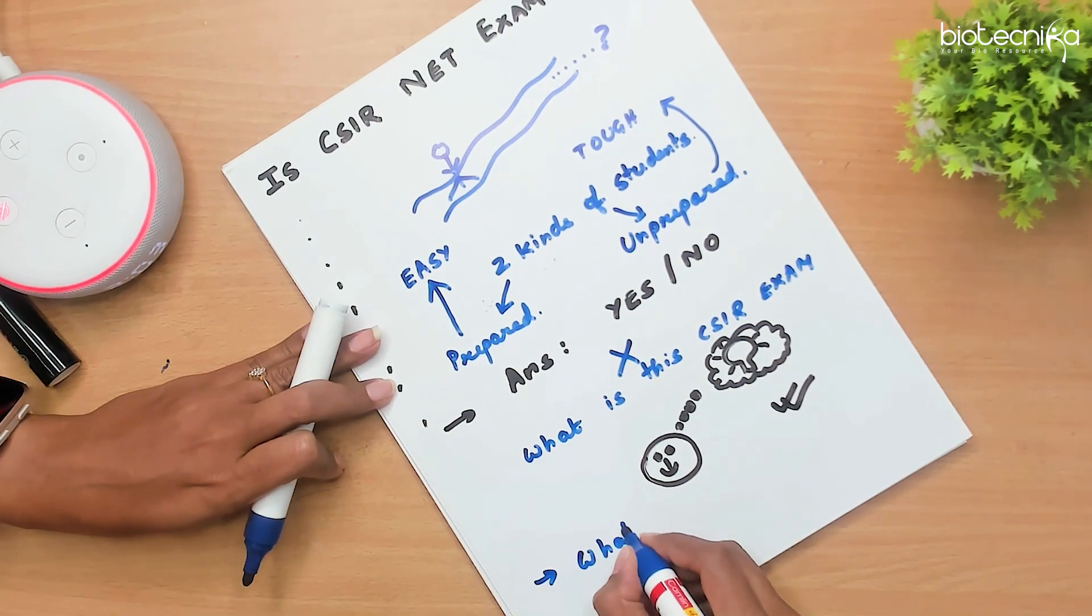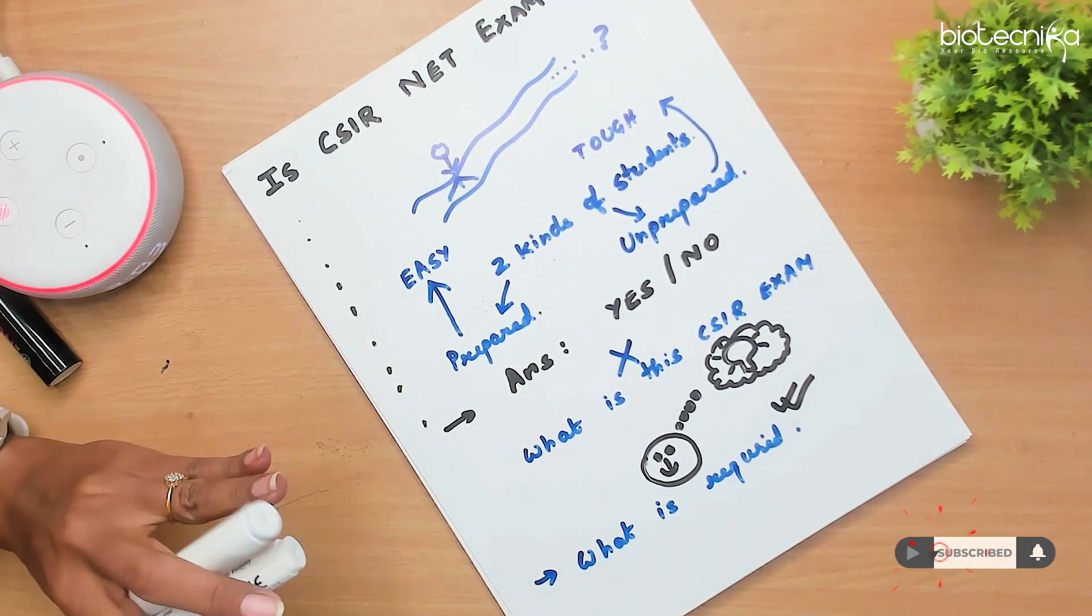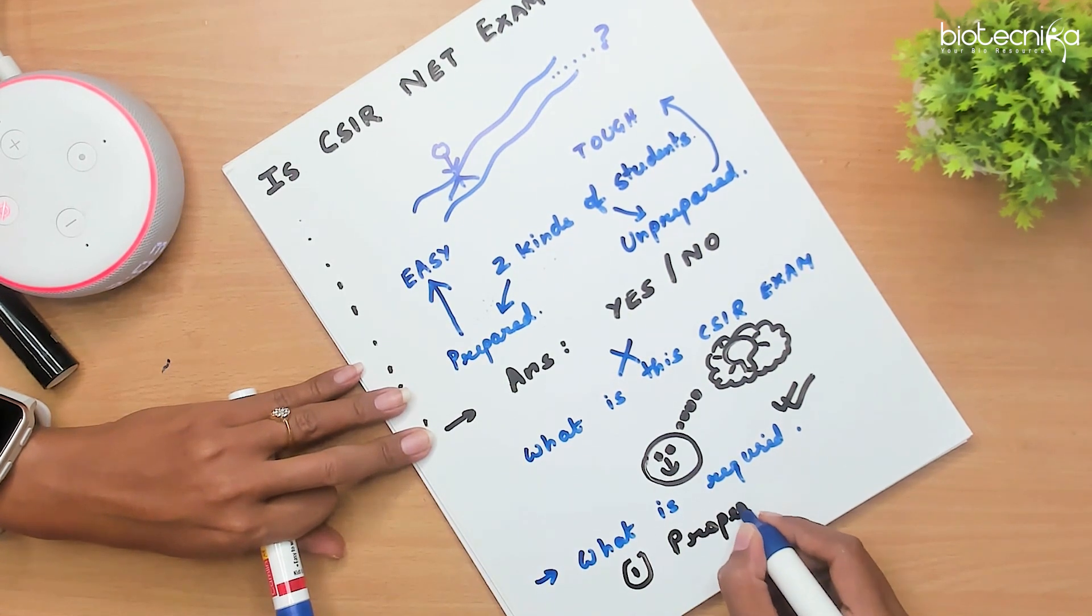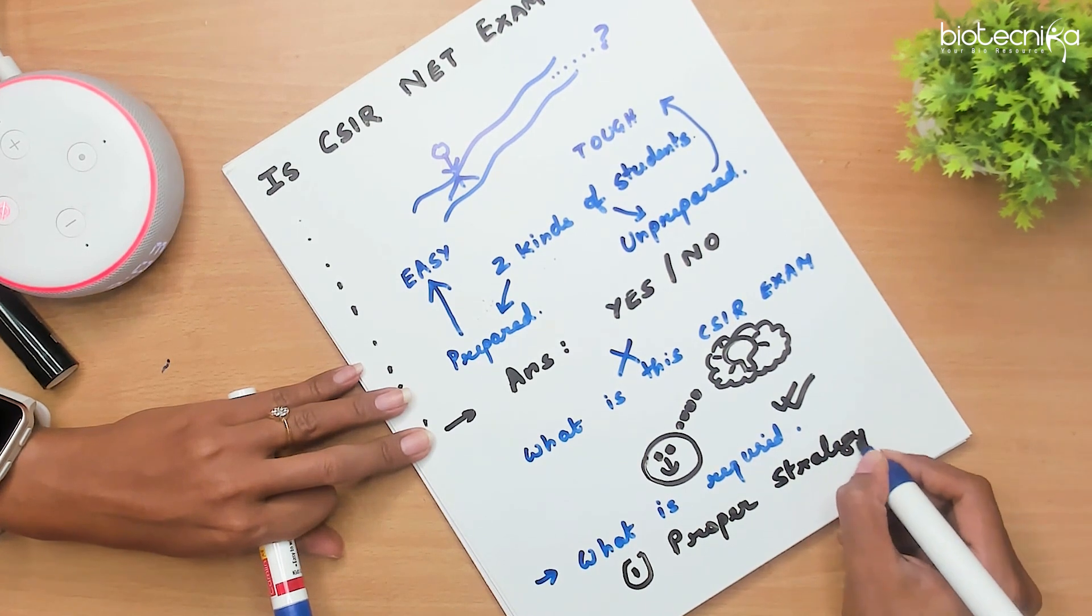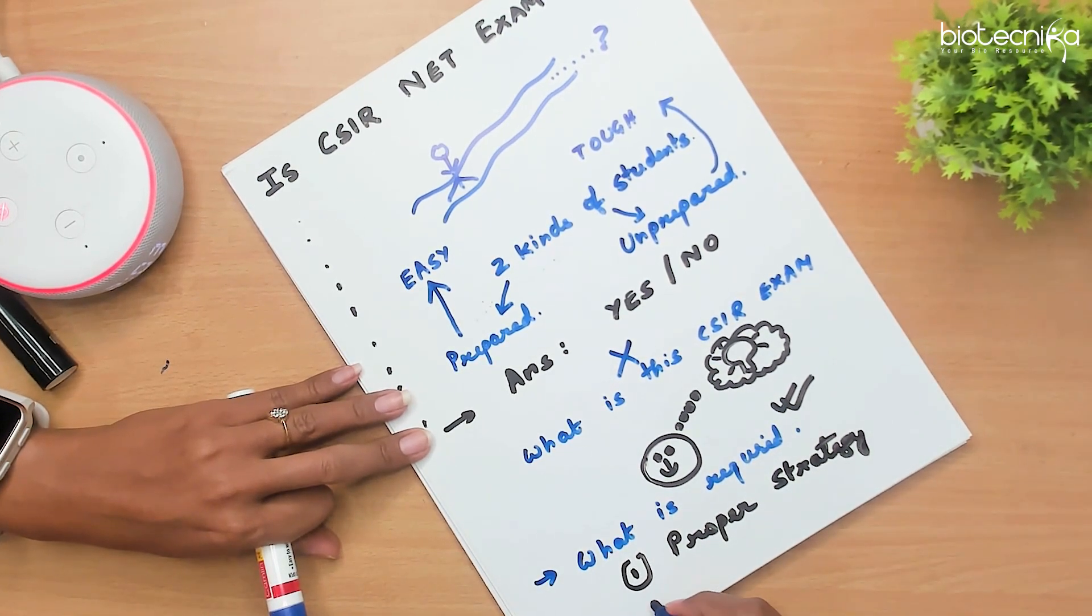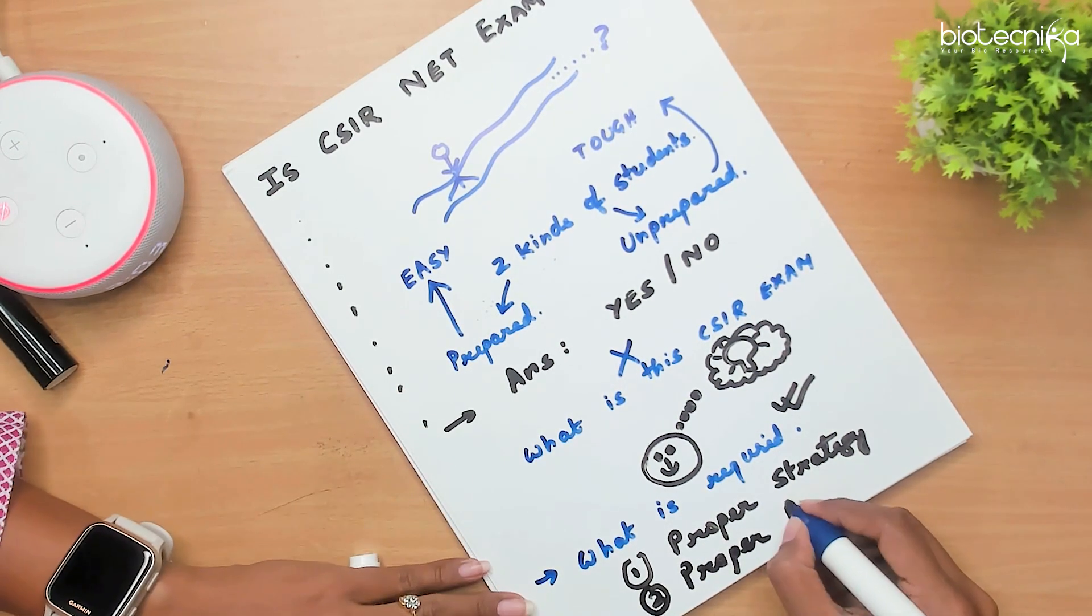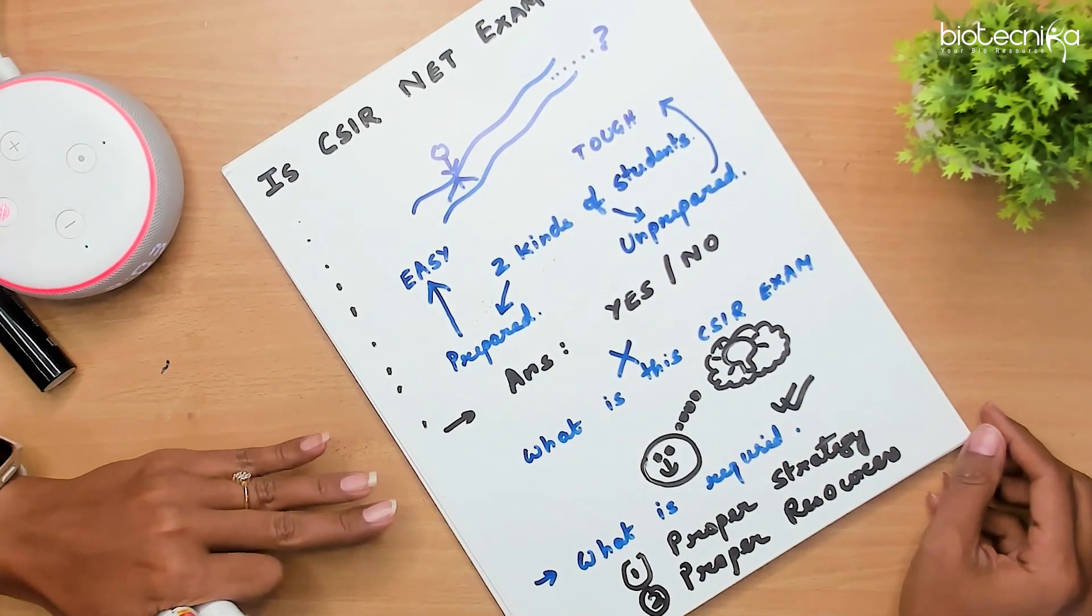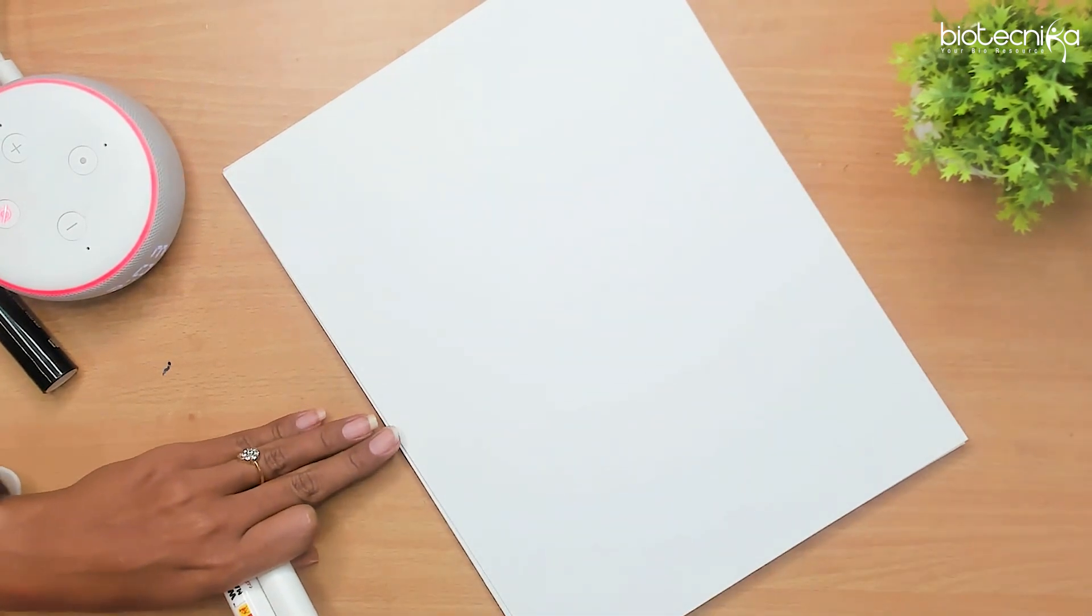Next question, what is required for clearing this particular exam? Well, you need two things. First thing is proper strategy. How many units you are going to prepare? How you are going along with your timetable? What all subunits you are going to prepare? Second thing is proper resources. From where you are going to prepare? Are those resources genuine? Are those resources authentic? Have they given foolproof results all the time and all along the way?